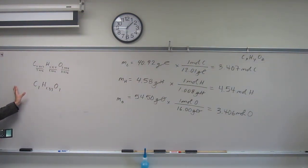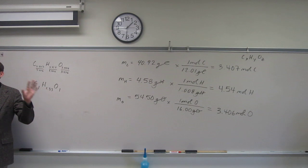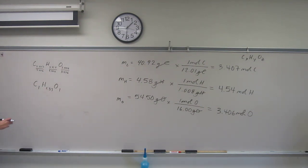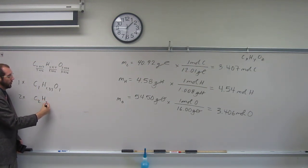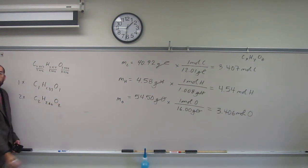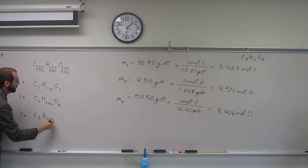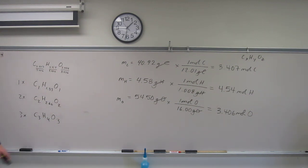So in order to get the empirical formula, what I would do is multiply by each integer consecutively until I get all three of them being very close to integers. If I multiply them all by 2, I get C2, H2.66, O2. If I multiply it by 3, which is what I'm going to multiply it by, then I get C3, H3.99 which is essentially 4, so H4, O3. And that's going to be an empirical formula.